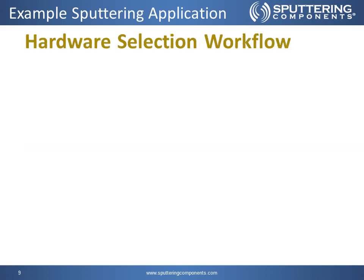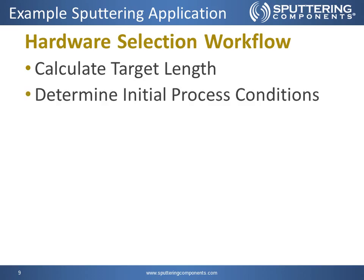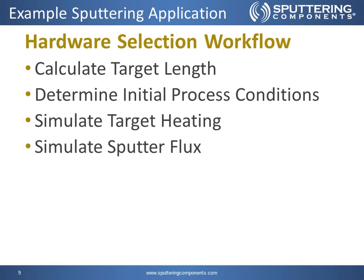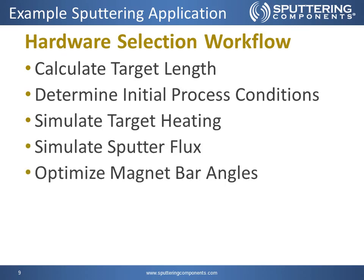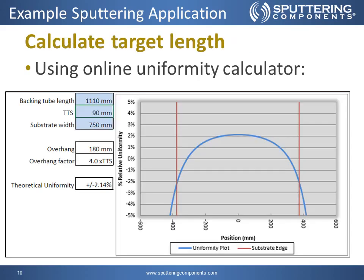For our hardware selection workflow, we'll start off by calculating the target length, determine the initial process conditions, simulate the target heating, simulate the sputter flux, and then optimize the magnet bar angles. To calculate the target length, we'll start off by using the online uniformity calculator, putting in our backing tube length at 1,110mm, the TTS or target to substrate distance at 90mm, and our substrate width at 750mm.